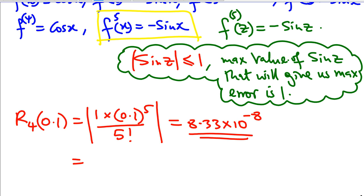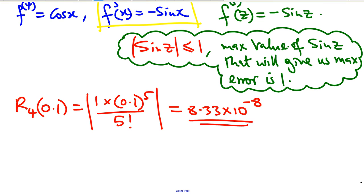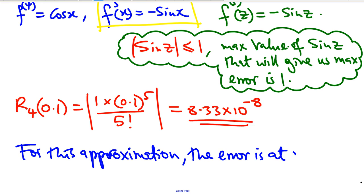What does that mean? It means that for this approximation, the error is at most 8.33 times 10 to power negative 8. So for this approximation, the error is at most 8.33 times 10 to power negative 8.